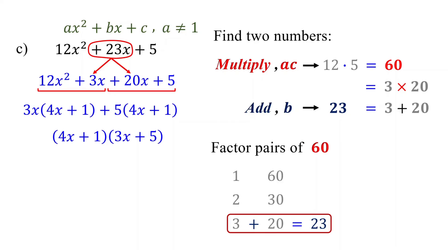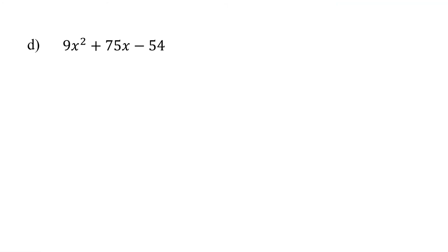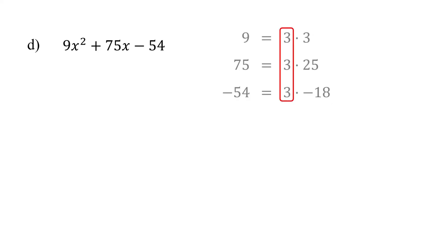Let's work on one more example that's a little bit more challenging. Notice that 9, 75, and negative 54 share 3 as their greatest common factor. So we can factor out 3 before proceeding to the next step. In fact, a general tip when factoring trinomials with a leading coefficient different from 1 is to start by factoring out any greatest common factor, especially if the numbers are large. This simplifies the factoring process. Now you can factor the trinomial in the parentheses using the AC method.